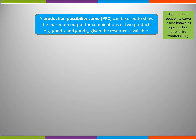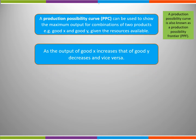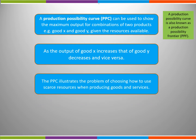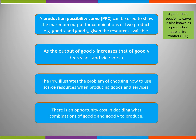The production possibility curve can be used to show the maximum output for combinations of two products given resources available. As the output of Good X increases, that of Good Y decreases, and vice versa. The PPC illustrates the problem of choosing how to use scarce resources when producing goods and services. There is an opportunity cost in deciding what combinations of Good X and Good Y to produce.